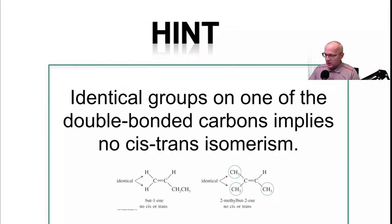Hint. Identical groups on one of the double bond carbons implies no cis trans isomerism. So here we have a double bond, two hydrogens on the same carbon. So because one of the carbon double bonds has the same group attached to it, there is no cis or trans. This is neither cis nor trans. Same for this one. Because one of the carbons of the double bond has two of the exact same groups attached to it. This is not cis nor is it trans. You can't use those words here. Because this is not cis or trans. And neither is this one. And that's because you have two of the same groups attached to one of the double bond carbons. Same thing here, double bond carbon, two of the same groups, no cis and trans.